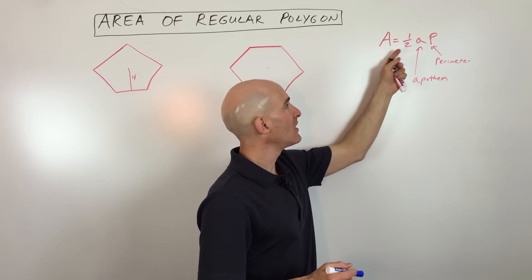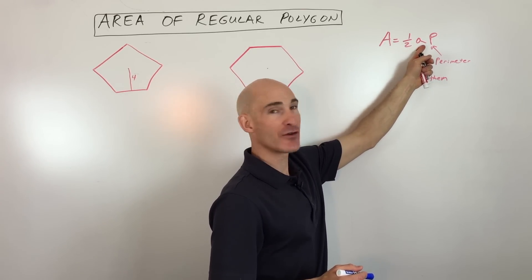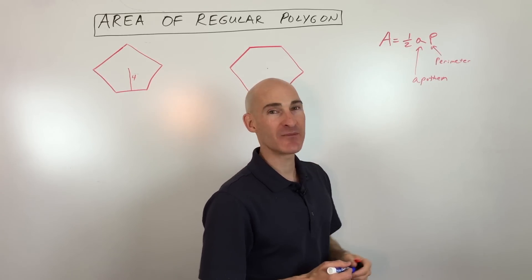Let me go over the formula with you here. The area equals one half the apothem times the perimeter. Now apothem, what does that mean?